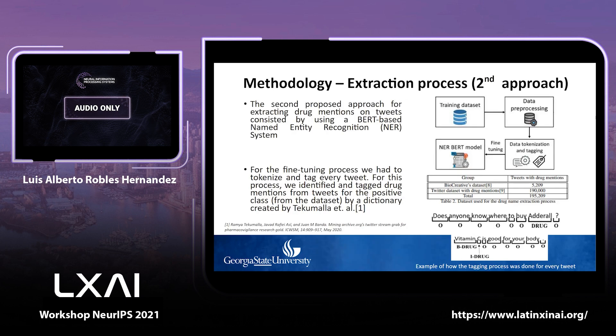For the second approach, we used a BERT-based named entity recognition system, trained on the positive class from the classification training set. An additional subset provided by Tekumala et al. was also used, with around 190,000 tweets, leaving approximately 195,000 tweets total to train the NER BERT-based model. Using a manually created RxNorm dictionary provided by the same author, we tagged every token found in the dictionary. The tokenization and tagging process is shown in the figure in the bottom right corner. With the fine-tuned model, we identified four possible drug mentions, and the output structure was the same as in the previous approach.